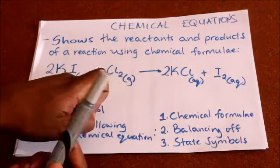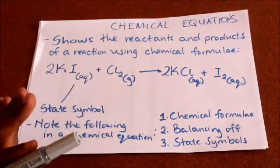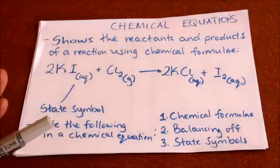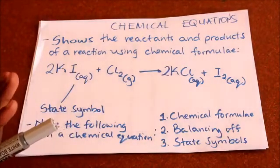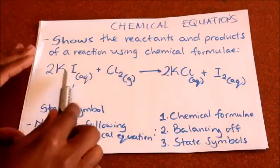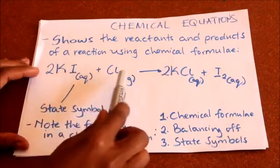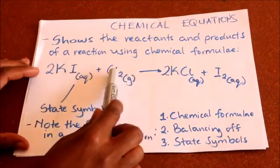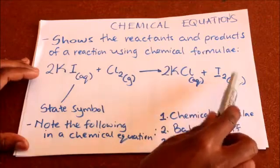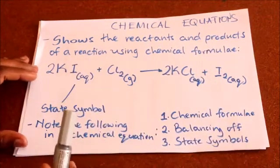If you remember, this is one of the displacement reactions we talked about when looking at the halogens. Aqueous signifies that a substance has been dissolved in water. Chlorine is also aqueous here. The state symbols are very important.